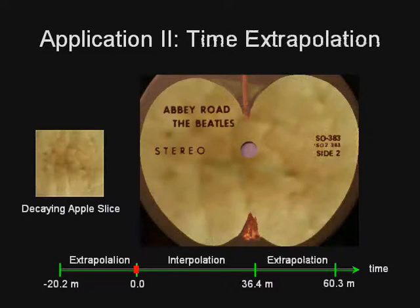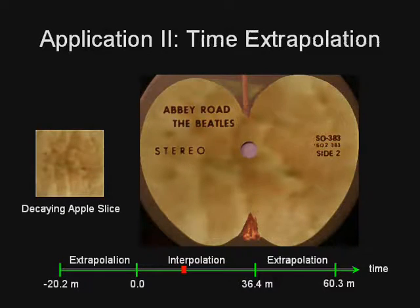In this example, we combine time-varying appearance from the decaying apple dataset with standard static texture mapping to allow the Beatles record album to decay over time.